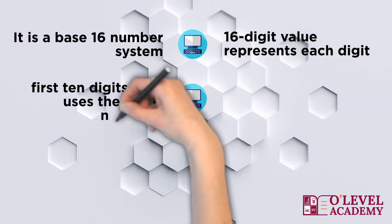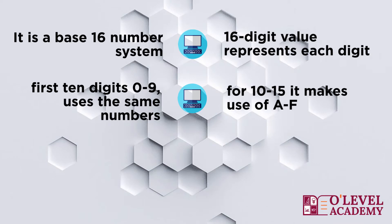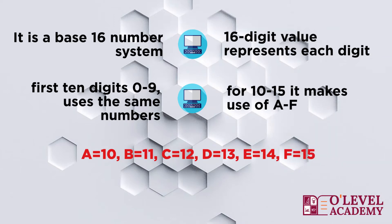For the first 10 digits from 0 to 9, it uses the same numbers. However, for 10 to 15, it makes use of A to F, i.e. A is equal to 10, B is equal to 11, C is equal to 12, D is equal to 13, E is equal to 14, F is equal to 15.